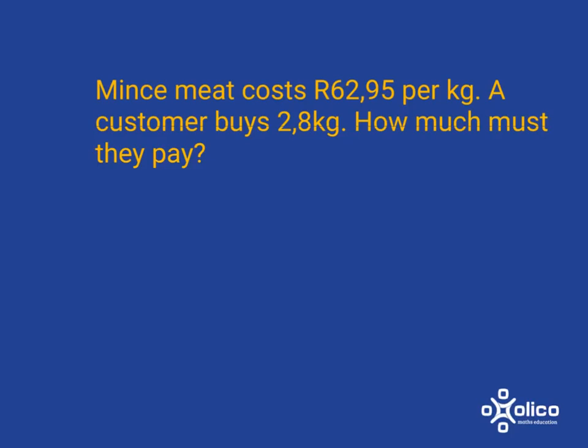You want to figure out how much they must pay for it. You're going to have to take the 62,95 — for each kilogram you pay that — so in order to work out how much you have to pay in total, you've got to multiply by 2,8. Now, I recognize you're going to take out a calculator to do this. But what's really useful in everyday life as well as in your maths exams is if, before you do a calculation — whether by hand or using a calculator — you have a good sense of what the answer might be, because it'll help you pick up any errors.